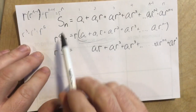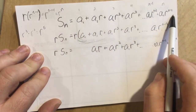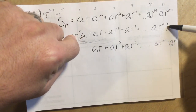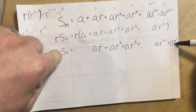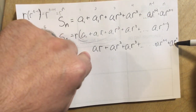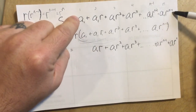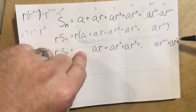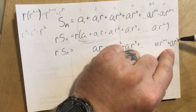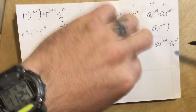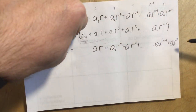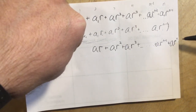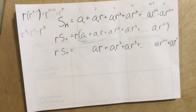Let's take stock of what we've done. We wrote out the sum originally. We then took a copy of that sum and multiplied both sides by r. We distributed the r, and now r times S sub n equals exactly the same middle terms as the original sum, but with a missing a sub 1 at the start and an extra a sub 1 times r to the n at the end.